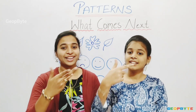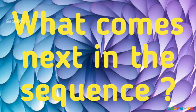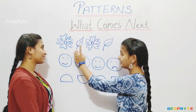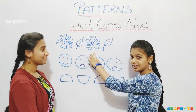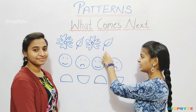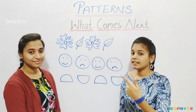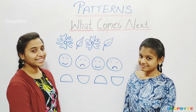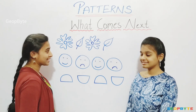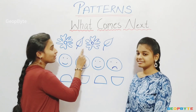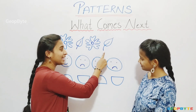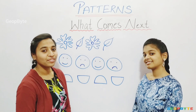What comes next? See here — there is a flower, leaf, flower, leaf. What comes next? Flower or leaf? Let us see. Kids, after leaf, we got a flower. So, after leaf, we will get a flower.